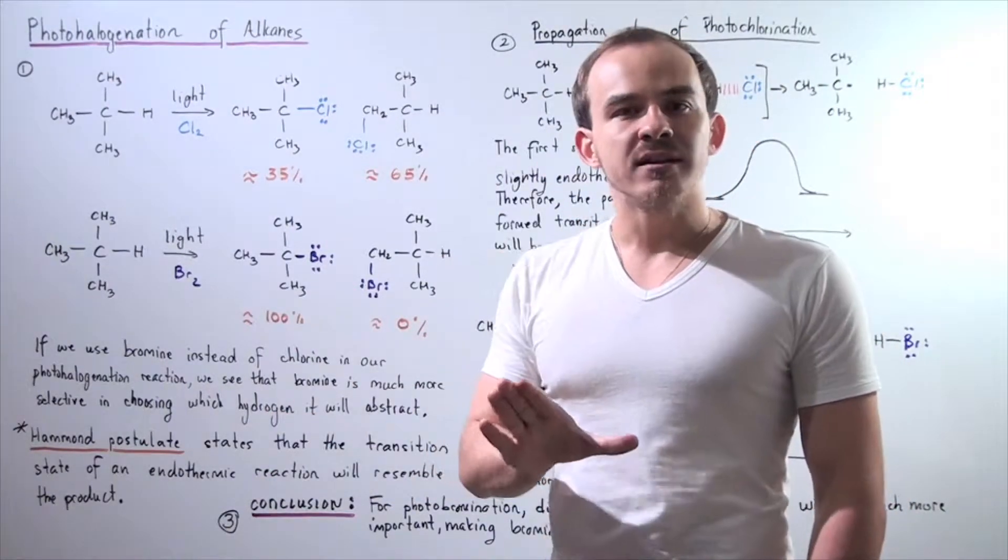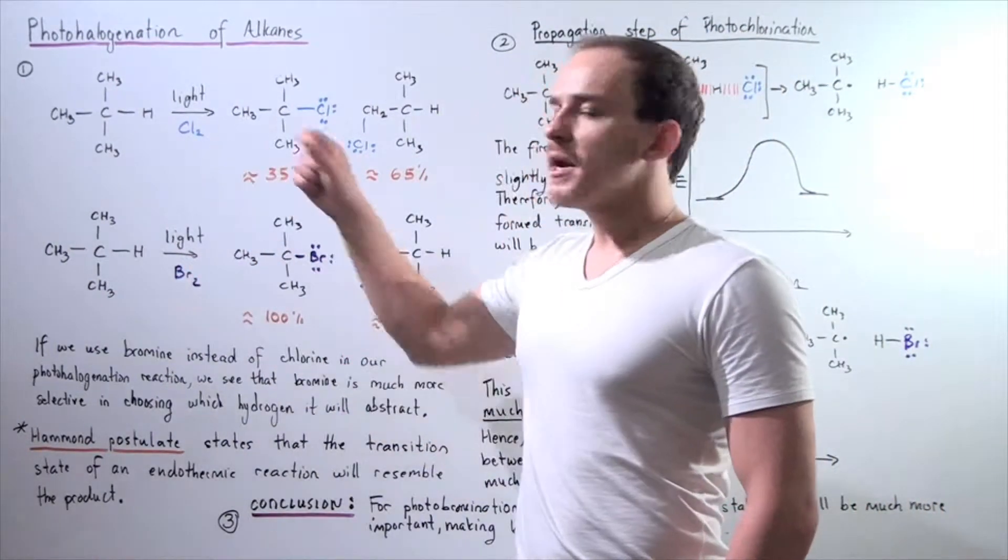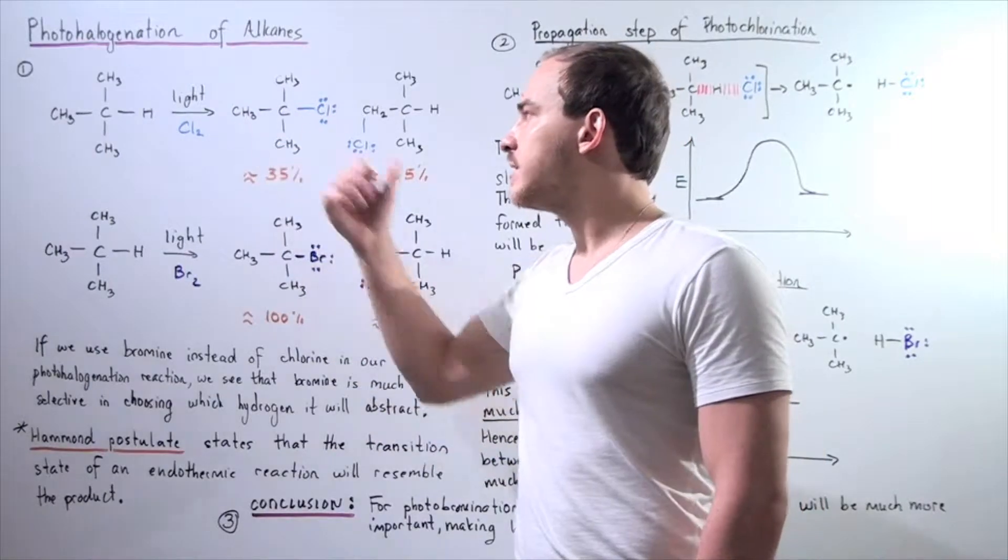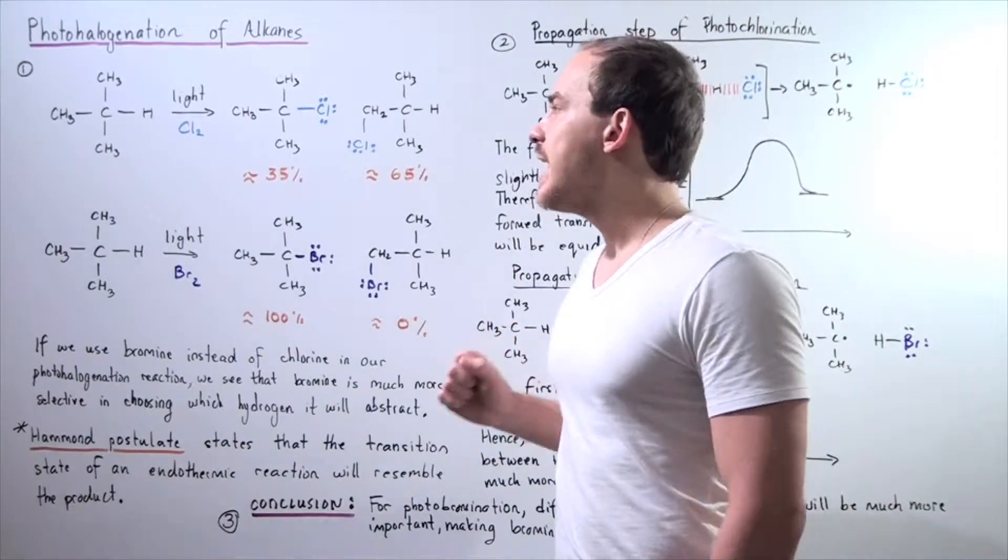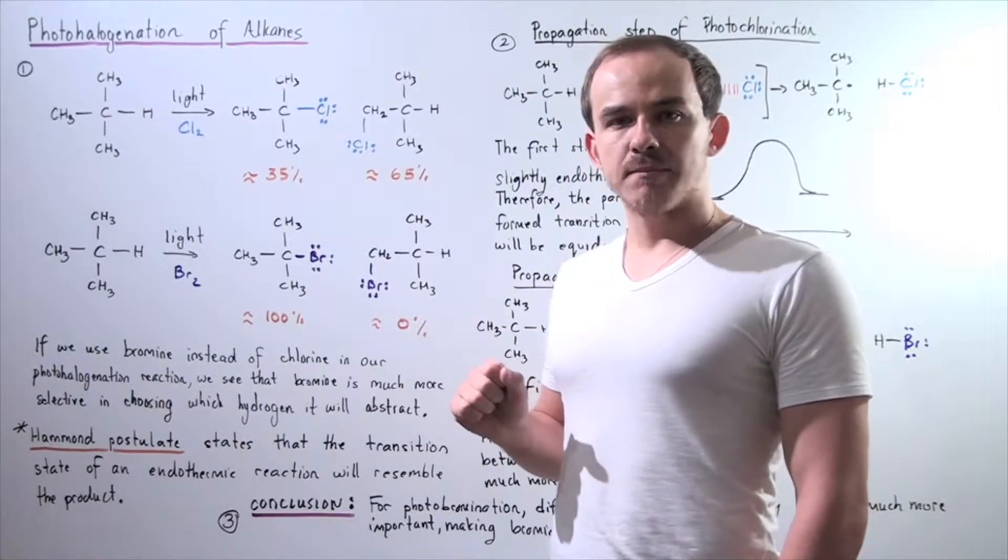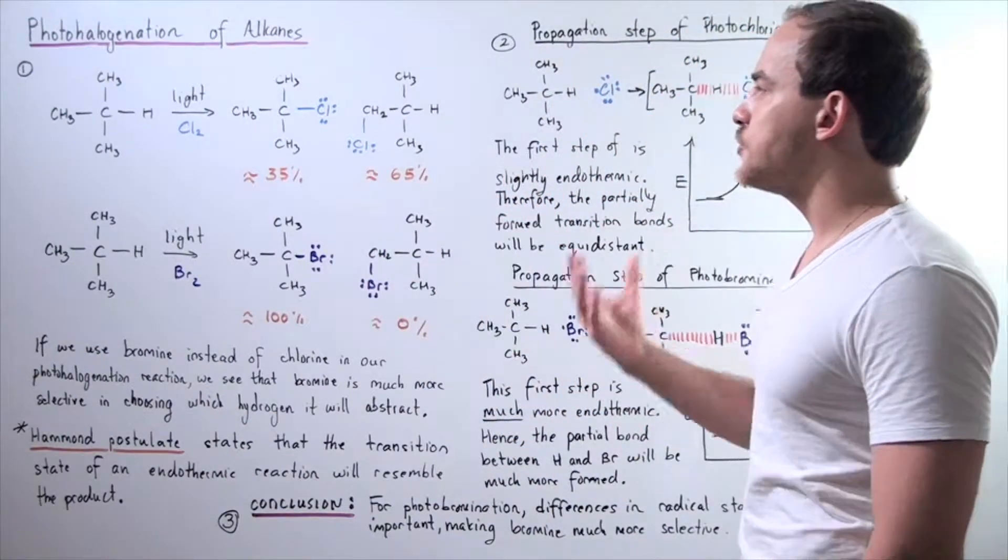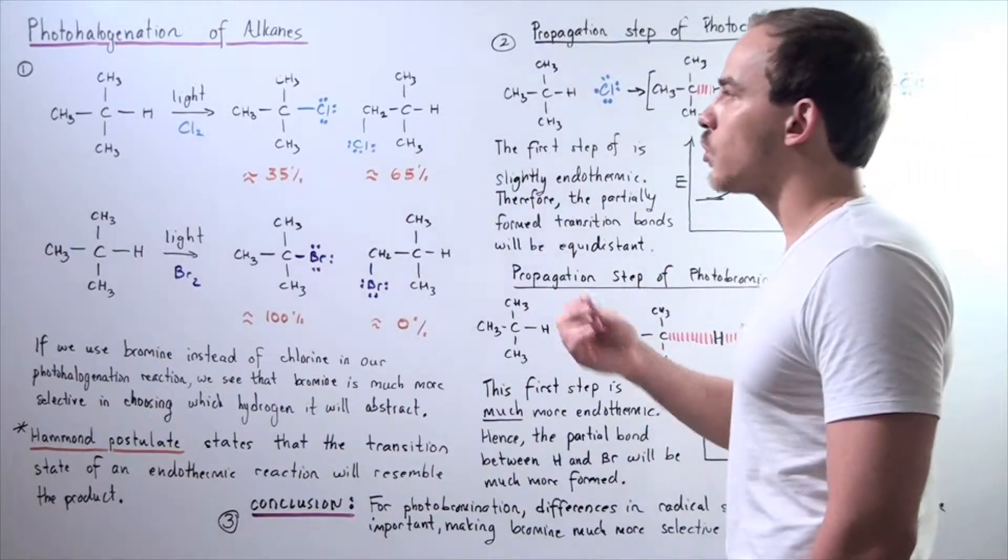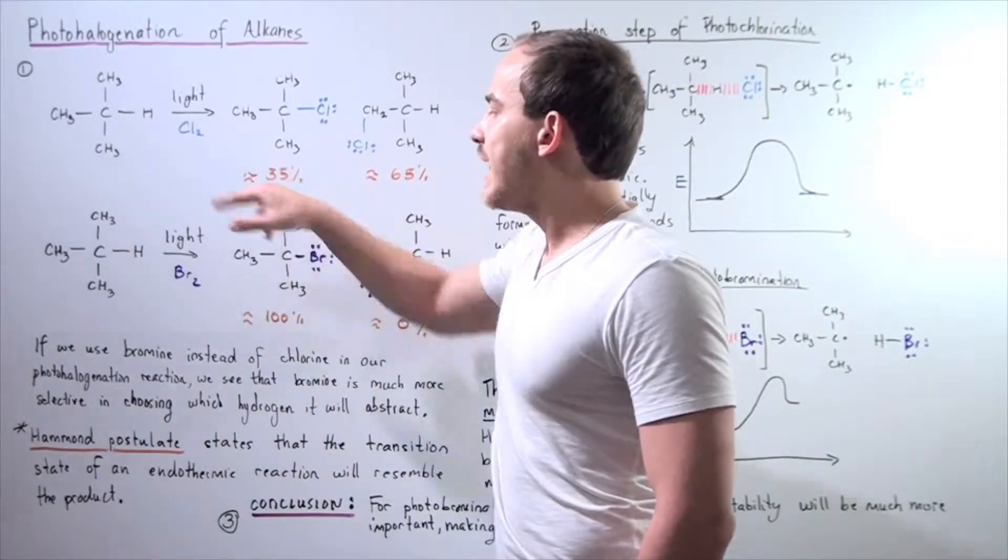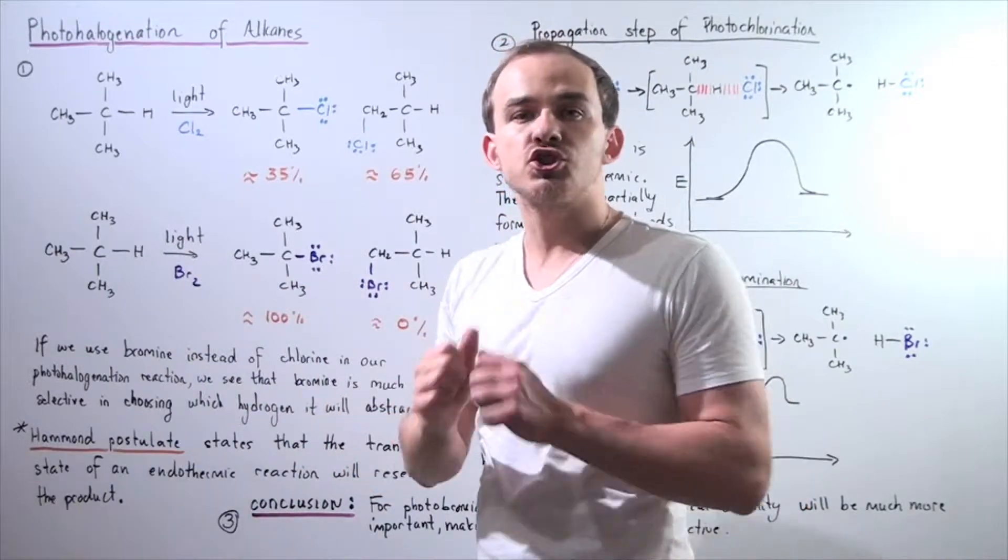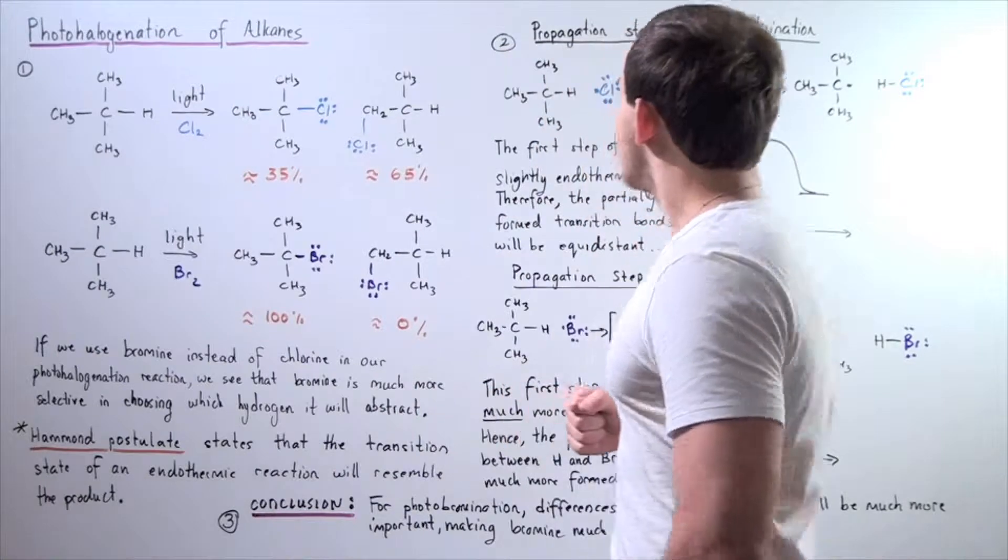But how exactly does this explain the selectivity of bromine compared to chlorine or bromide compared to chloride radical? Well, to answer that question, let's examine our propagation steps of these two radical reactions. So, let's suppose our initiation step takes place. In other words, we add the light source and both of these halogens, the chlorine halogen and bromine halogen, dissociate, forming two chain-carrying radicals.